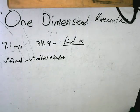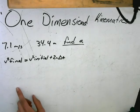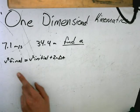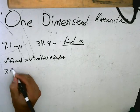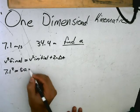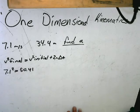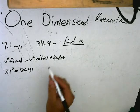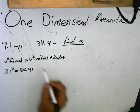Here we have the final velocity which is 7.1, so you square that number which equals 50.41. So 50.41 equals 2a times 35.4.